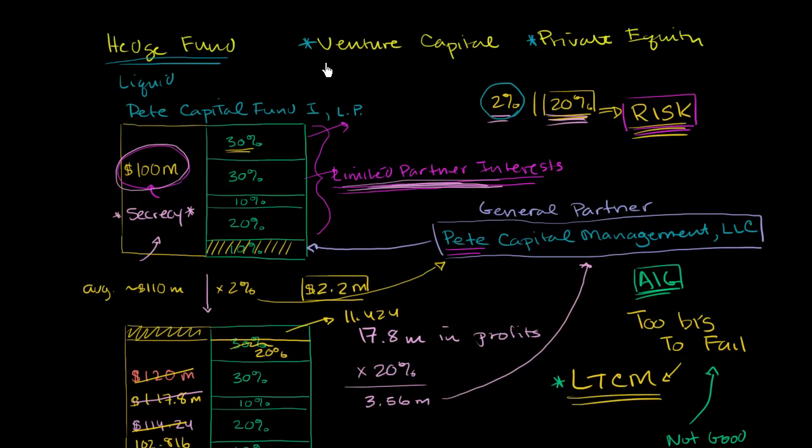A venture capital firm or a private equity firm, what they'll do is they'll say, look, I'm going to raise a $100 million fund, but I'm not going to be able to just go out the door tomorrow and invest $100 million. In the case of a venture capital firm, they're going to have to look at business plans and entrepreneurs and do their due diligence. Same thing for a private equity firm, they're going to have to look for companies that they might want to buy.